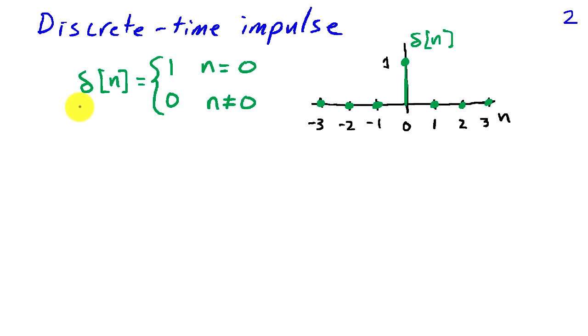A discrete-time impulse is denoted by the symbol delta of n, and this signal takes on the value 1 when n is equal to 0, and it takes on the value 0 everywhere else. The graph is 0 everywhere except for this value 1 at the origin.